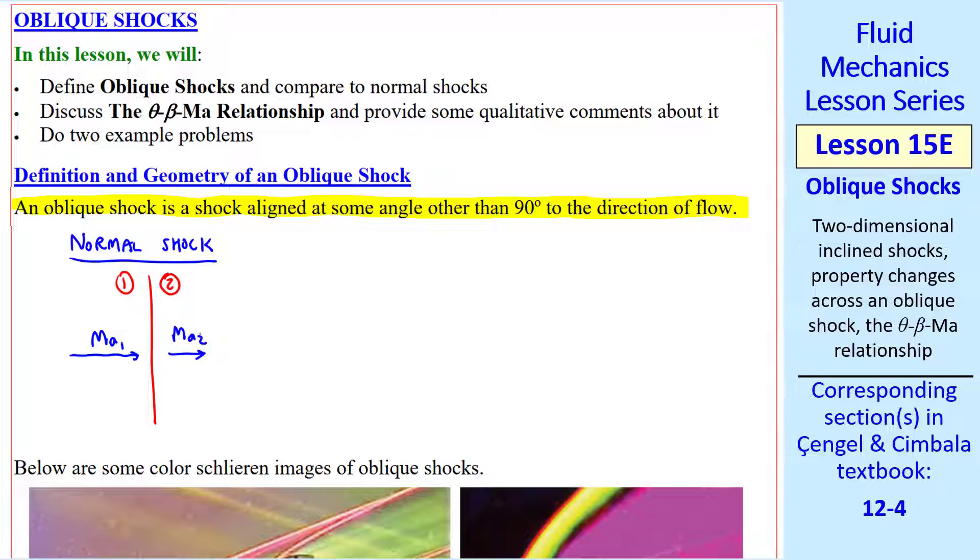First, consider a normal shock. We define angle beta as the shock angle, measured from the upstream direction of flow. So for a normal shock, beta is 90 degrees. We define theta as the turning angle, namely the angle at which the flow turns. If this is a streamline, we see that it doesn't turn at all. So theta is 0 degrees for a normal shock. We also know that Mach number 1 is greater than 1, and Mach number 2 is less than 1 for any normal shock.